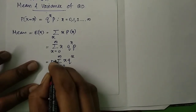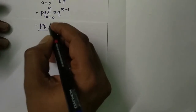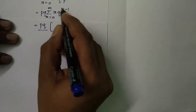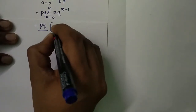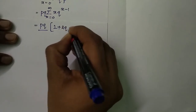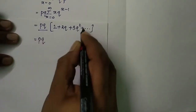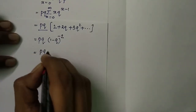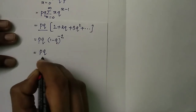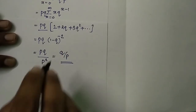A factor of q can also be taken out, giving pq times the summation of x times q raised to x minus 1. Expanding: when x=0 the term is 0; when x=1, 1 times q^0 = 1; when x=2, 2 times q^1 = 2q; plus 3q squared, plus etc. This is the expansion of (1-q) raised to minus 2, so the result is pq times p raised to minus 2, which equals q divided by p. This is the mean of a geometric distribution.